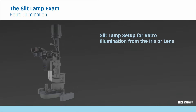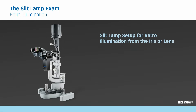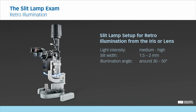To set up the slit lamp for examination with retroillumination from the iris or crystalline lens, choose a medium to high light intensity and a slit width between 1.5 and 2 mm. Set the illumination angle between 30 and 50 degrees. Choose a magnification of 10 times, or 16 to 40 times for higher detail. Initially start at low magnification and then augment as needed.